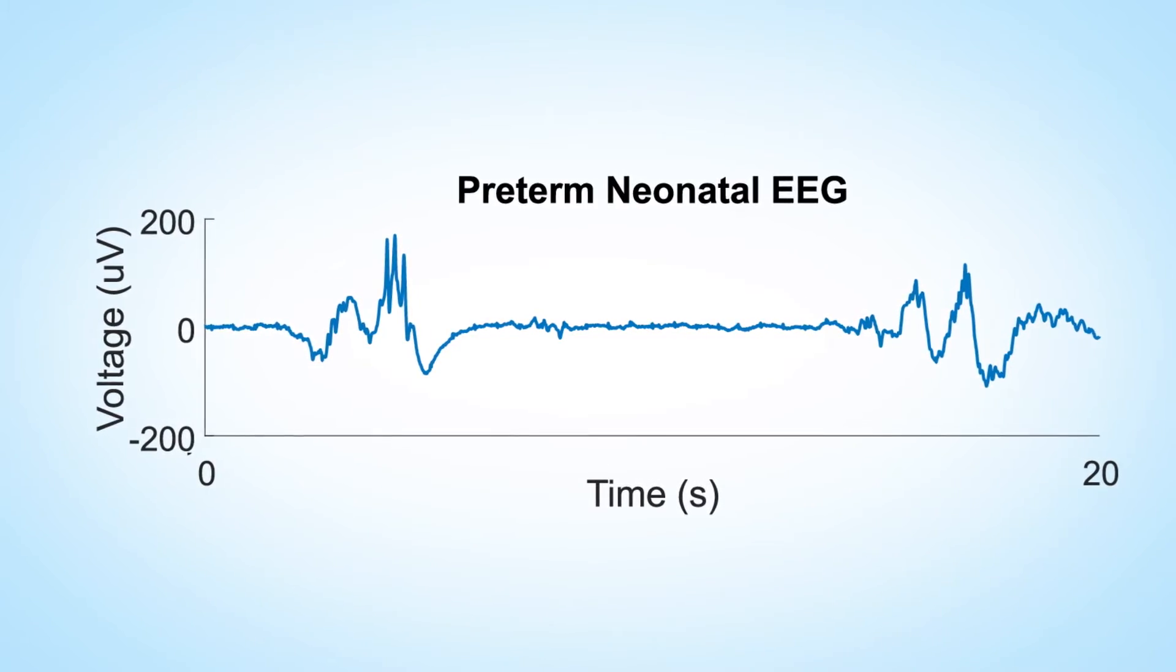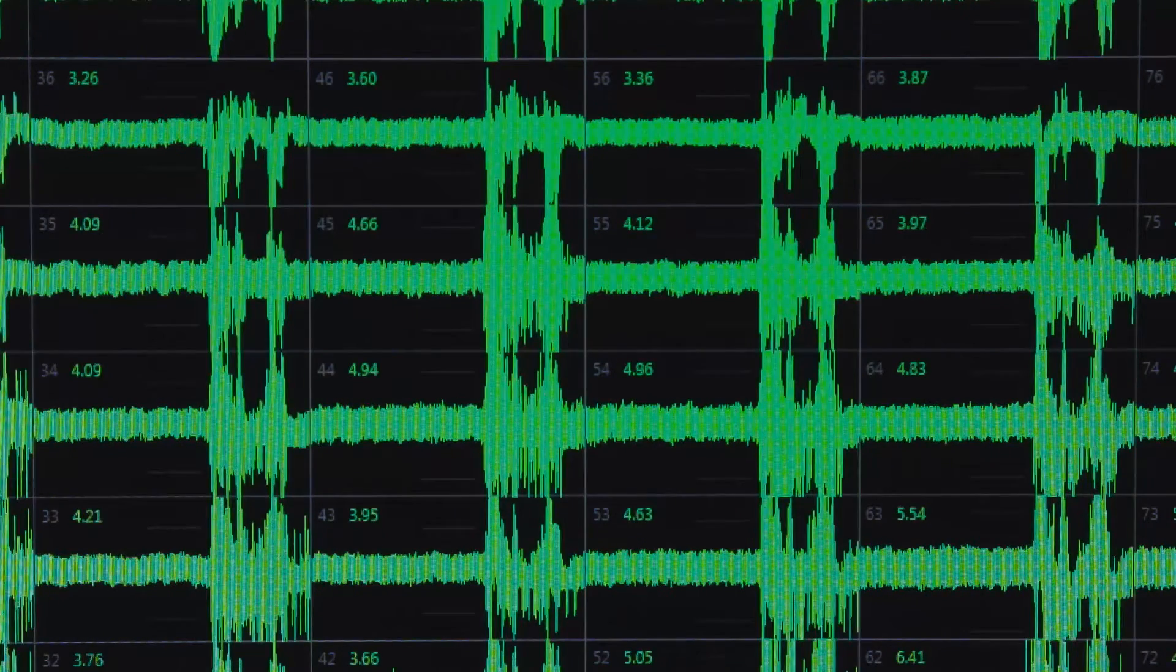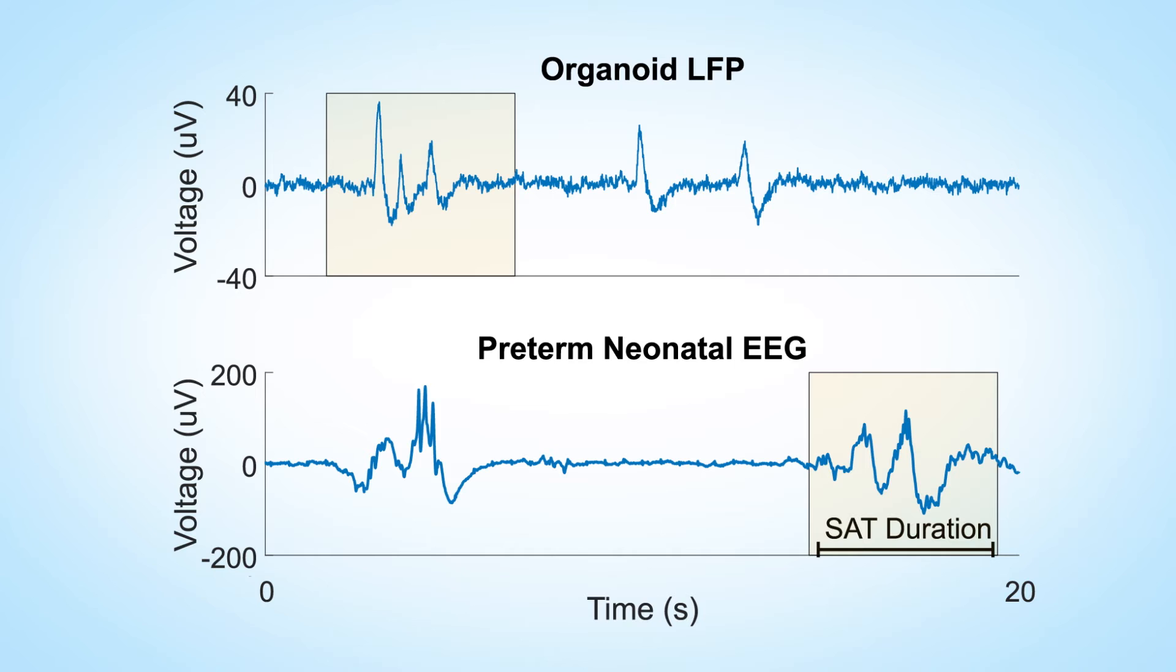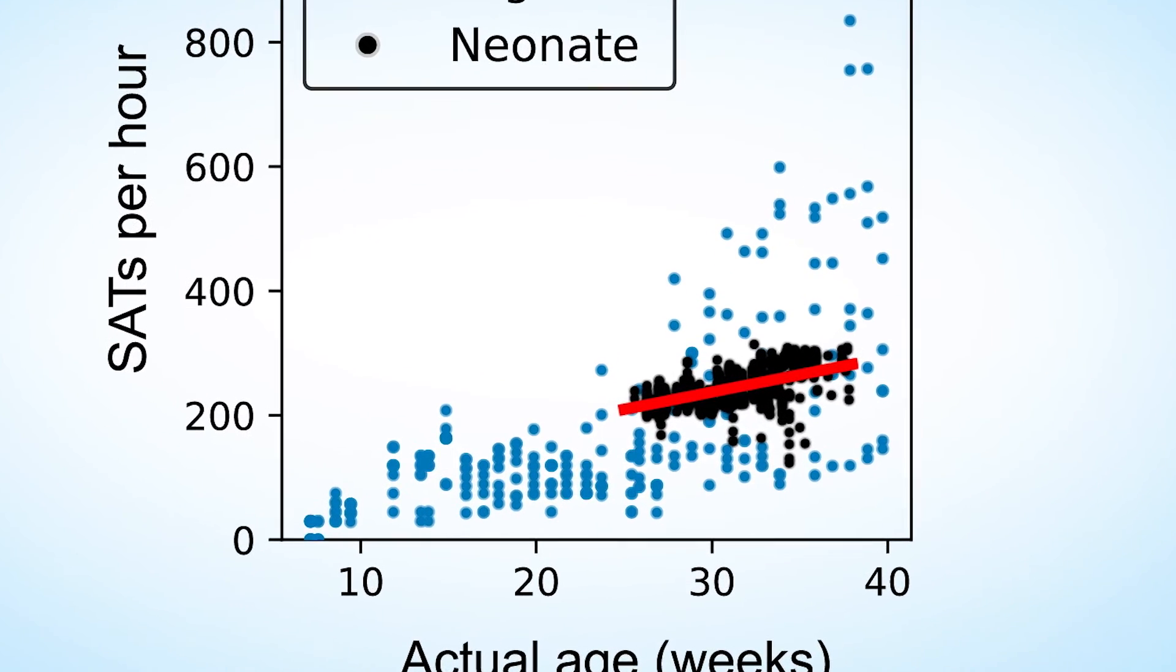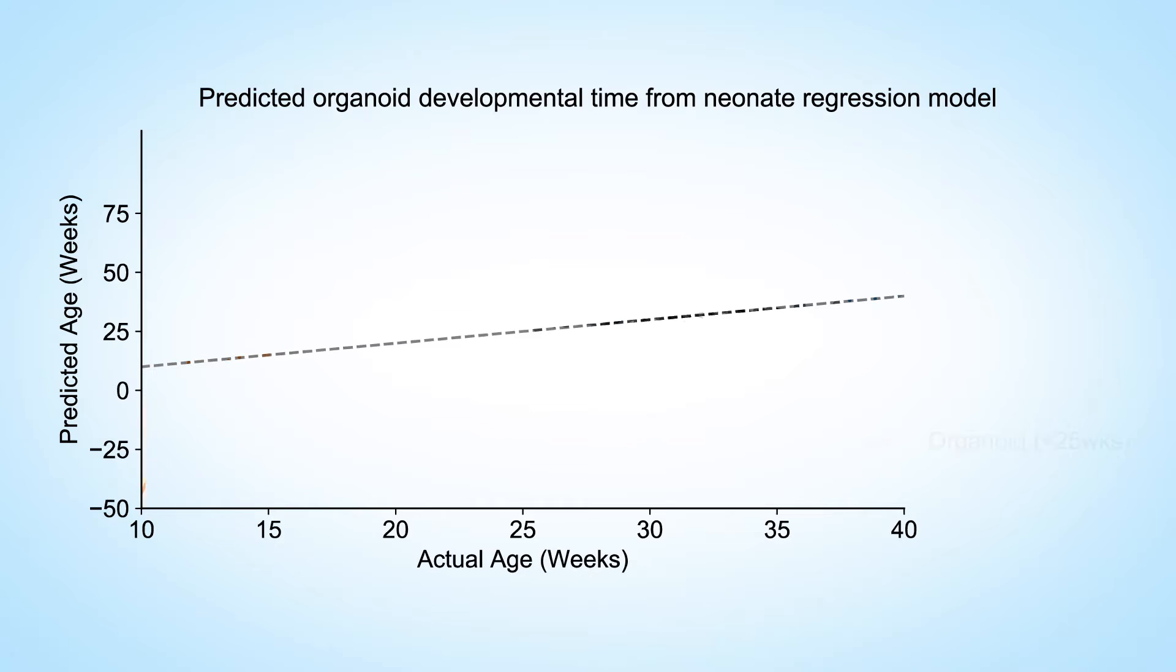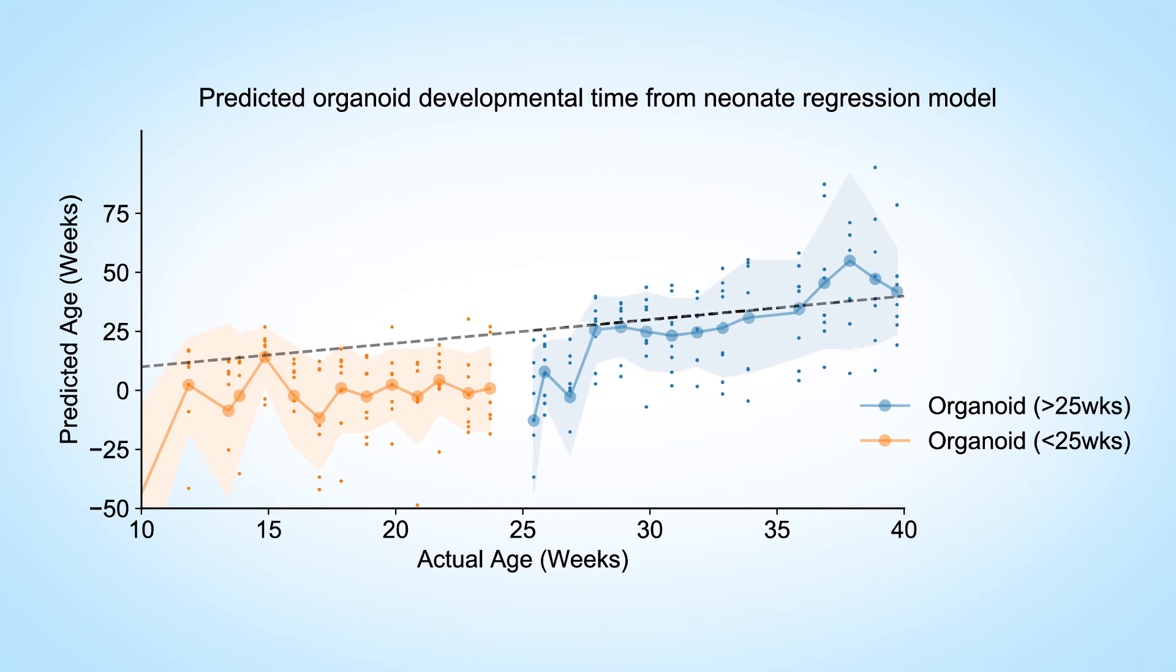While on the surface, the EEG data and the MEA data look wildly different, the researchers looked closely at agnostic characteristics that both data sets shared, namely duration of an oscillation event and the interval between the events. The model was trained using data recorded from actual neonates aged from 25 to 38 weeks. What did the model reveal? In the time span where the model hasn't seen the EEG data, so before 25 weeks, it predicted really poorly for the organoids. Whereas starting from about 25 weeks, the prediction became a lot more correlated with the actual developmental time of the organoids. Therefore, from the model's perspective, there are similar features in the EEG data from the preterm babies, which it has seen, compared to the organoid data, which it hasn't.